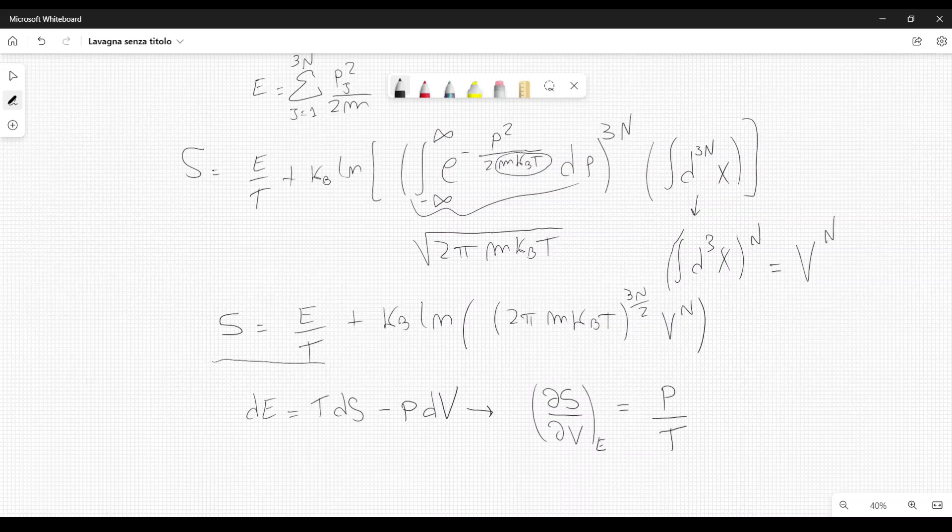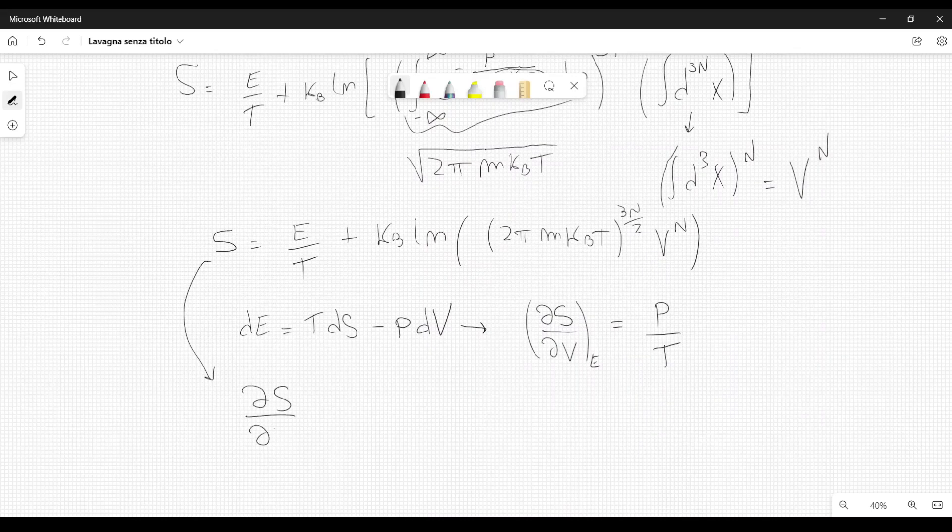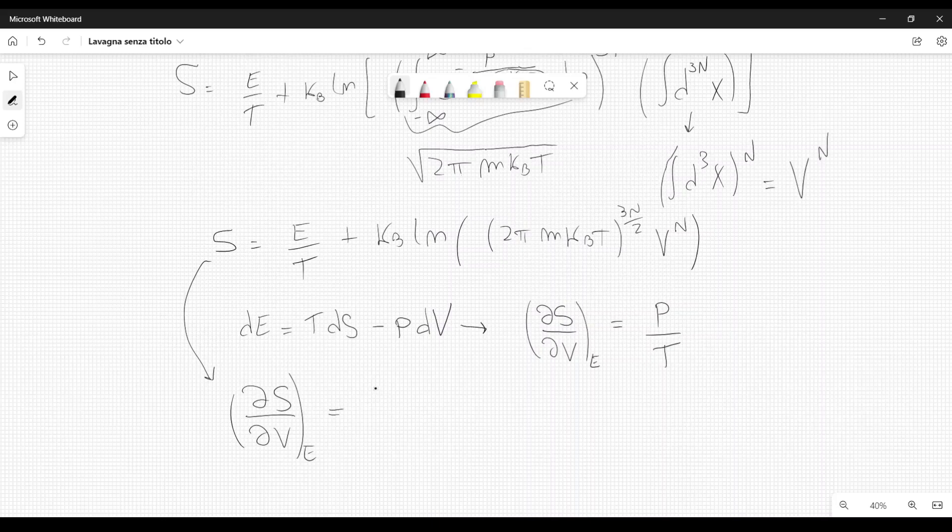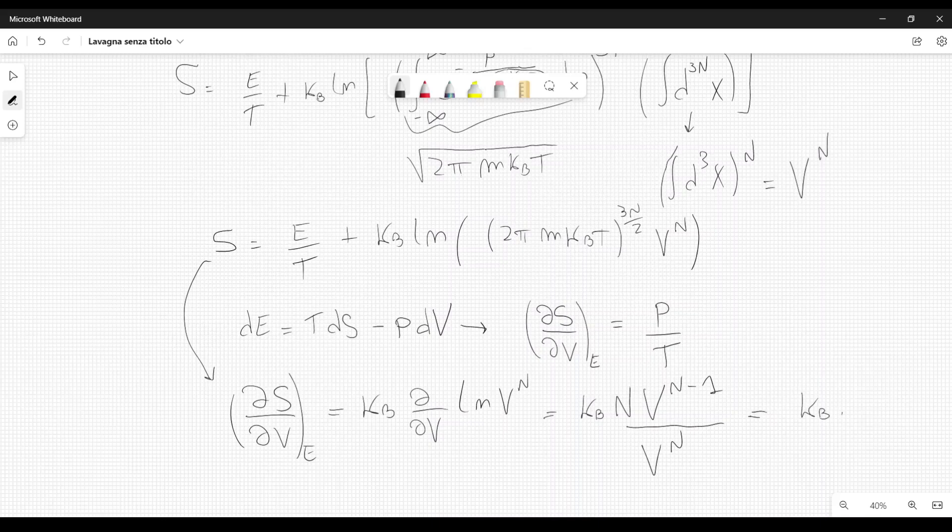Now we can take the derivative of the entropy with respect to volume using this expression here. From this expression and from the properties of logarithms, we can rewrite this as dS over dV, keeping E constant, equal to K Boltzmann derivative with respect to volume of the logarithm of V to the power n, because this is just a constant with respect to the volume, and the logarithm of this multiplied by this is just the sum of the two logarithms. So the first part gives no contribution. We only have the contribution given by this one. This gives us K Boltzmann and V to the power n minus one divided by V to the power n. So this is just K Boltzmann and N over V.